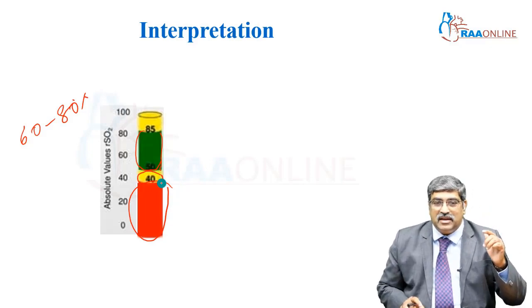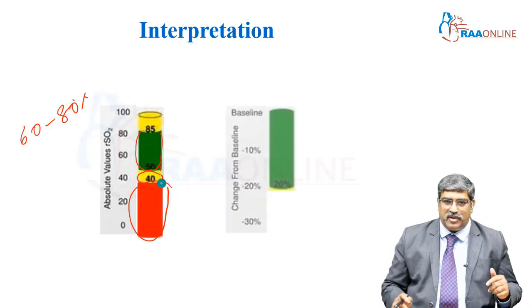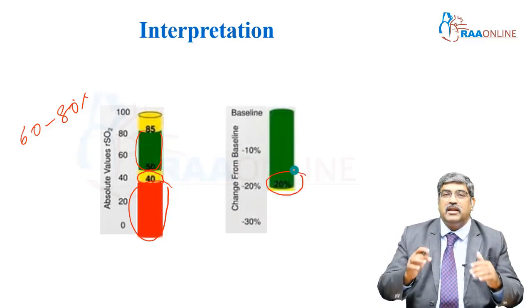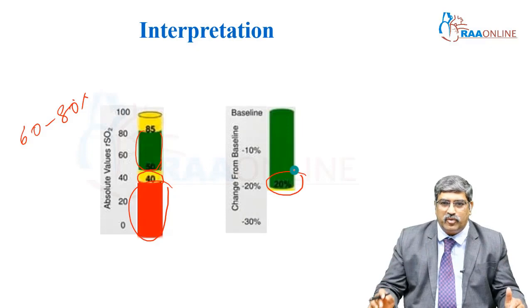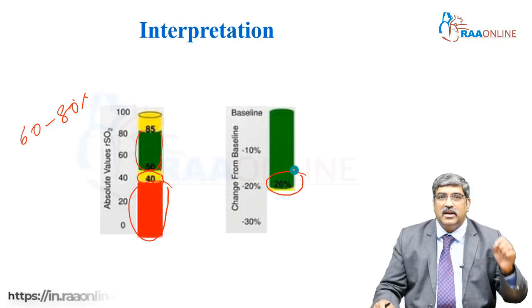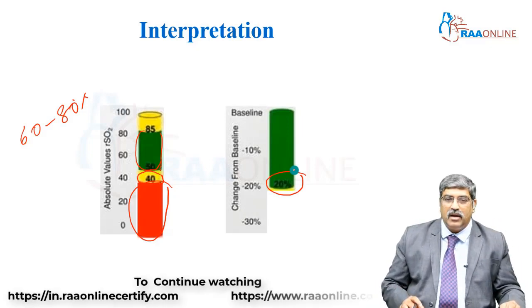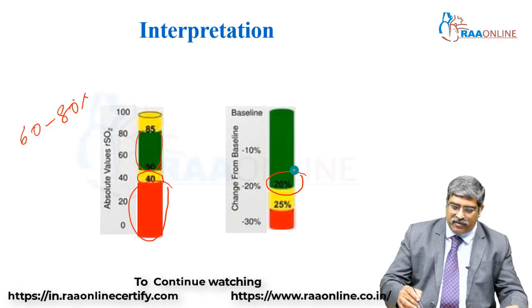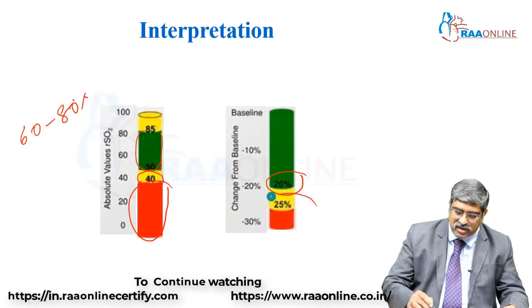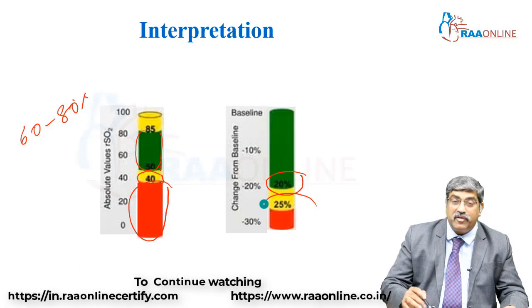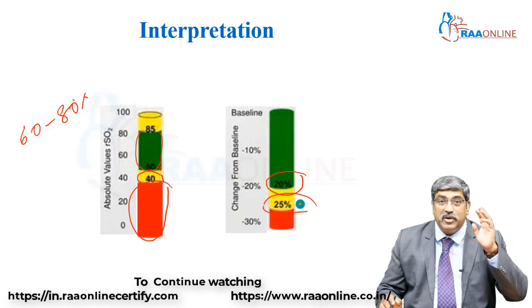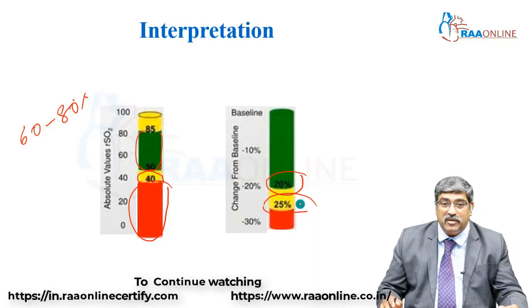If you consider the deviation from the baseline, any deviation more than 20 percent is very significant. And if the deviation is more than 25 percent, you must intervene and perform the appropriate intervention.